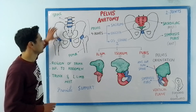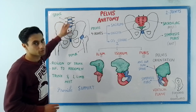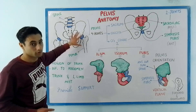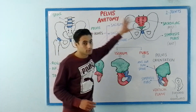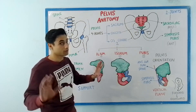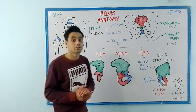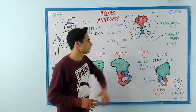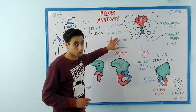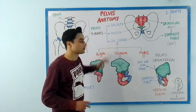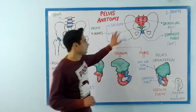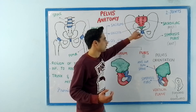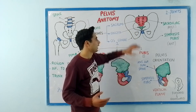Now let's get rid of the femur bones and the vertebral column and see the bony features of the pelvis. Have a look at this diagram — very simple to understand. We can see that the pelvis is made up of four bones: sacrum, coccyx, and the two os coxae. The sacrum is shown in red color.